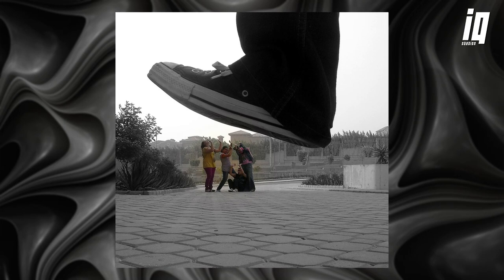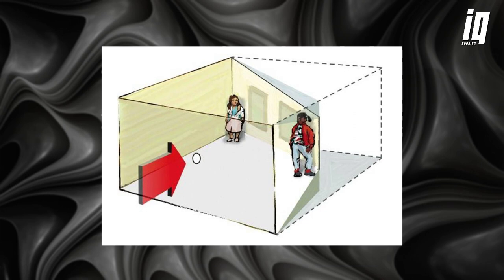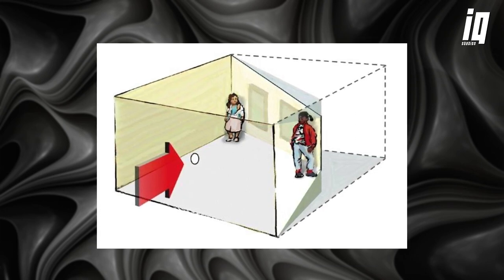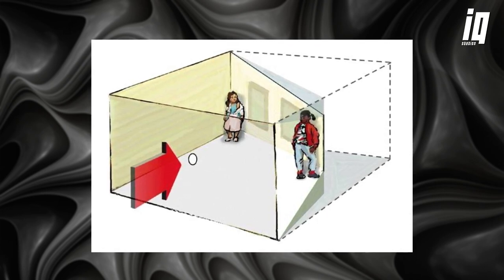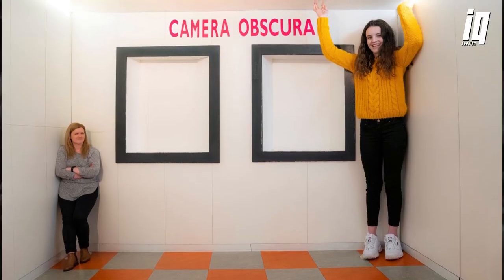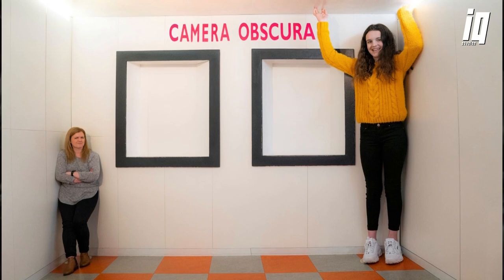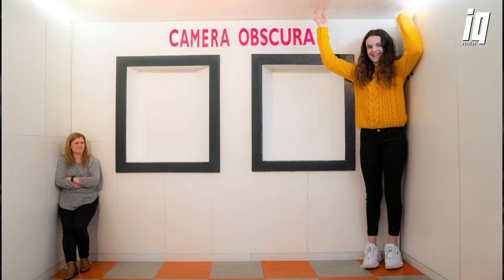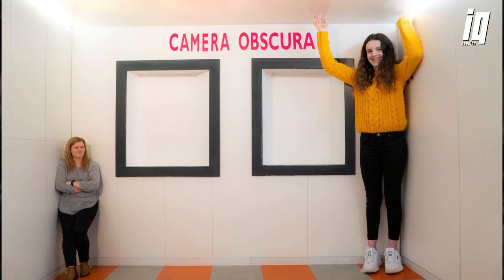One example of this is the Ames Room illusion. An Ames Room is a specially constructed room that appears to be perfectly rectangular, but it's actually built with trapezoidal walls and a tilted floor. The result is an optical illusion that makes objects in the room appear to be different sizes than they actually are. When you look into an Ames Room, you see two people standing at opposite ends — one person appears to be much larger than the other, even though they're actually the same size. This is because the room's trapezoidal shape creates an illusion of depth that tricks our brains into misinterpreting the size of the objects.